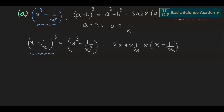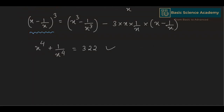We can find the value of x minus 1 divided by x by using the given value: x to the power of 4 plus 1 divided by x to the power of 4 equals 322. We can write x to the power of 4 as x squared to the power of 2, plus 1 divided by x squared to the power of 2, equals 322, because 2 multiplied by 2 equals 4.